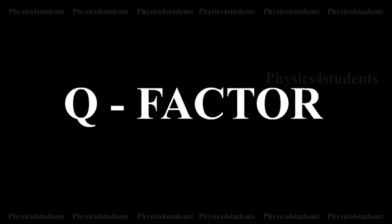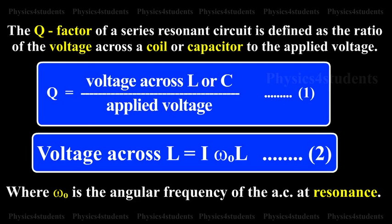Q Factor. The Q Factor of a series resonant circuit is defined as the ratio of the voltage across a coil or a capacitor to the applied voltage.